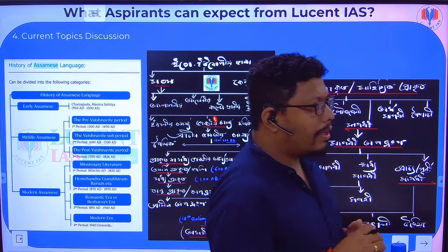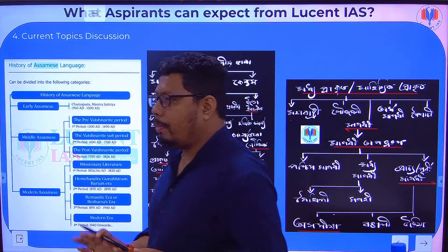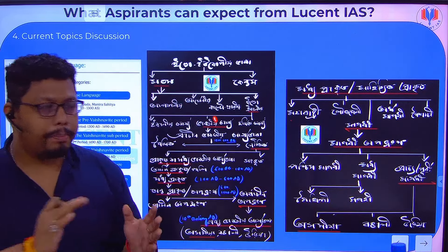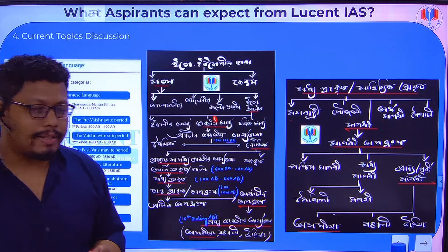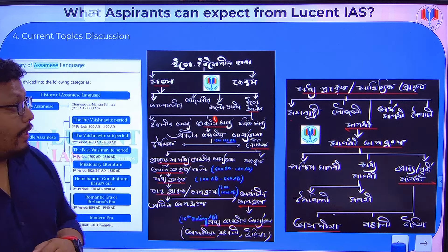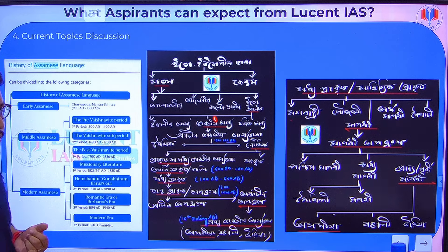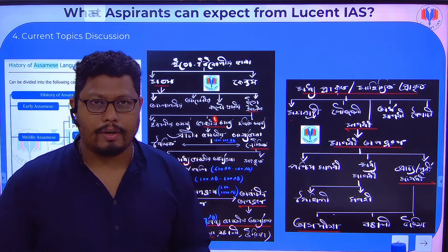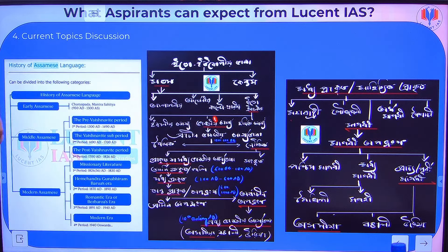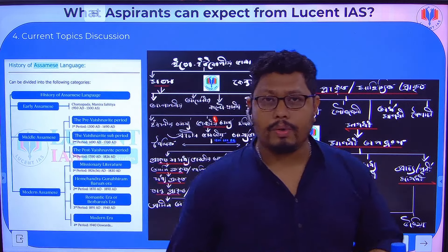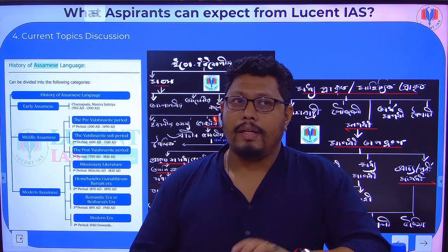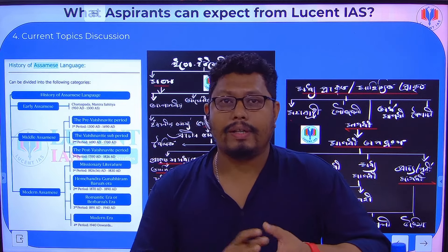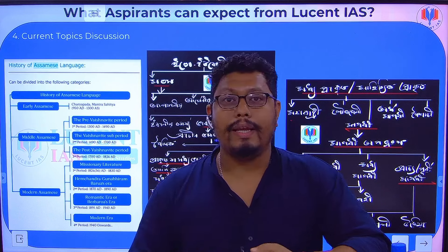Current affairs are covered holistically. For example, taking the topic of Assamese as a classical language — currently in the news — you need to study the source and evolution of the language. But you also need to study the criteria for classical language status and what differentiates it, which will be important for the interview.